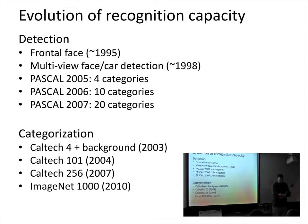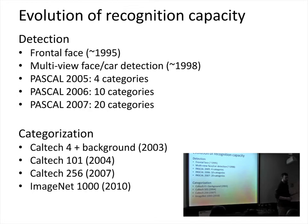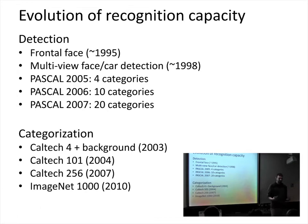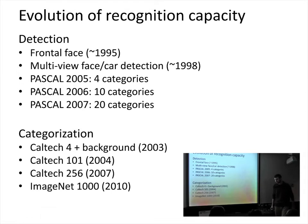But when we go about our daily tasks, we don't really do recognition that way. Most of the time we're not searching for a particular object we have in mind, nor classifying into one of K categories. Instead we have to deal with the world as it comes to us. And that's important for a lot of applications where you put a machine out into the world.